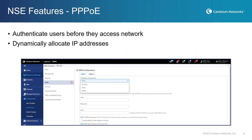PPPoE-based IP assignment provides a way for the ISP to authenticate its users before granting them access to the Internet. This authentication process helps to prevent unauthorized access to the ISP's network, which helps to increase security. It also allows the ISP to dynamically allocate IP addresses to its customers, meaning the ISP can reuse IP addresses as customers connect and disconnect from the network, which helps to conserve the limited pool of available IP addresses.